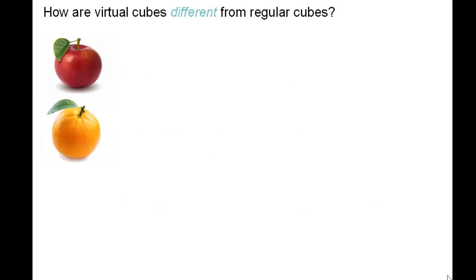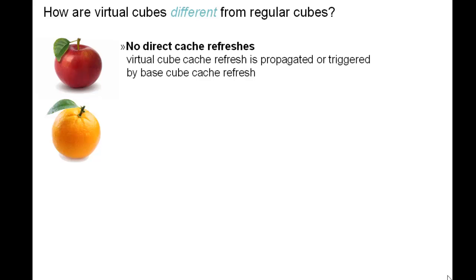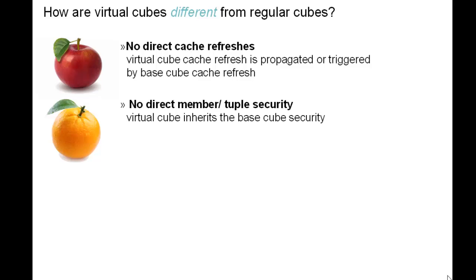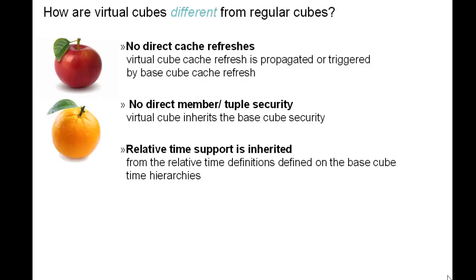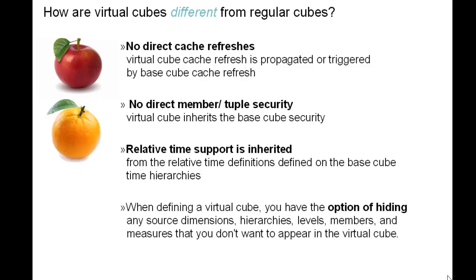How are virtual cubes different from regular cubes? There is no direct cache refresh — a virtual cube cache refresh is propagated or triggered by base cube cache refresh. There is no direct member or tuple security; virtual cubes inherit the base cube security. Relative time support is inherited from the relative time definitions defined on the base cube time hierarchies. When defining a virtual cube, you have the option of hiding any source dimensions, hierarchies, levels, members, and measures that you don't want to appear in the virtual cube.